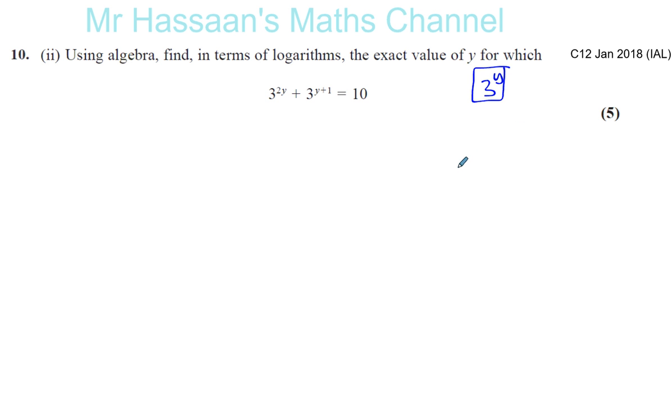We're going to use the laws of indices that we know. For example, 3 to the power of 2y would be the same as 3 to the power 2 times 3 to the power of y. No, it won't be actually. That's wrong. That's another misconception. Remember, 3 to the power of 2y, this is the result of a product of two things. So it's the same as 3 to the power of y to the power of 2.